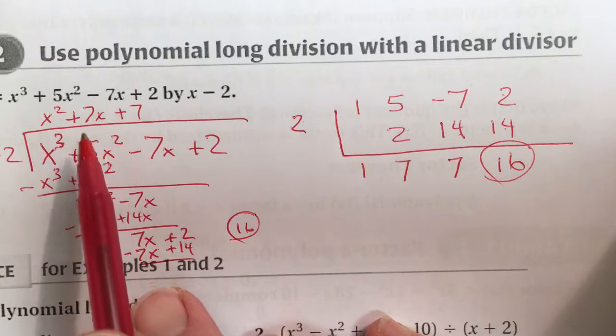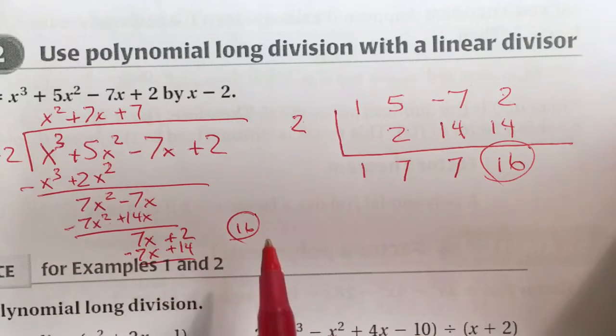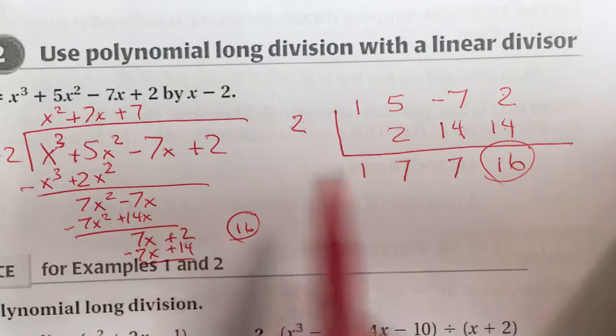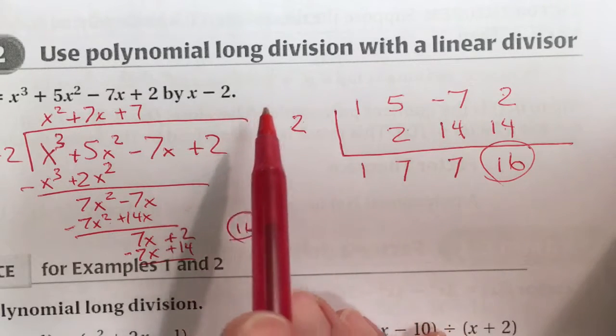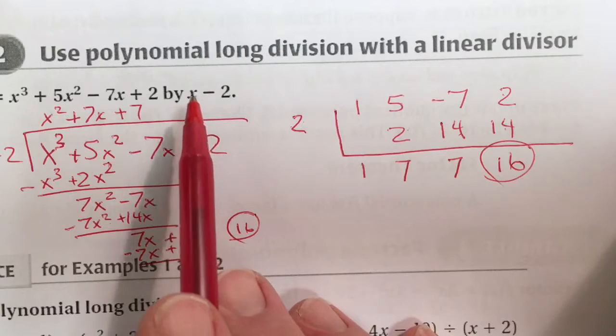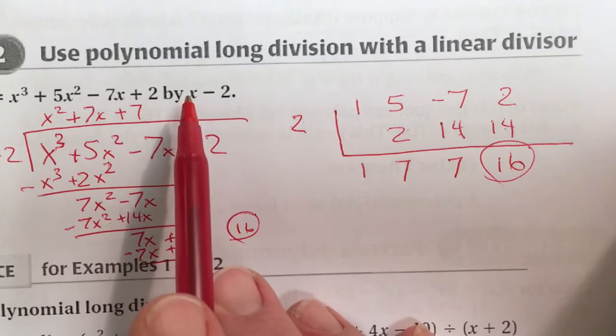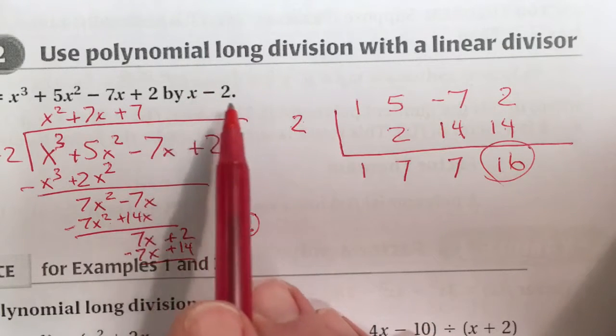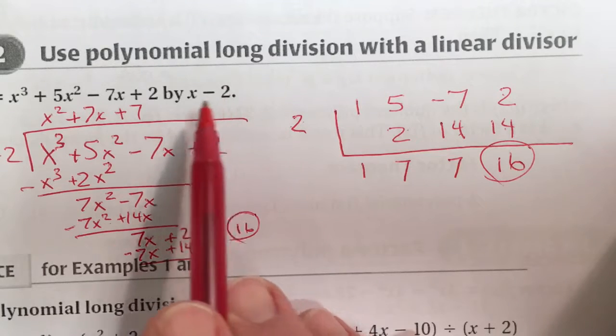This only works when we're doing polynomial long division with a linear divisor. In this case, it's got to be just an x term with a constant. And always change the sign.